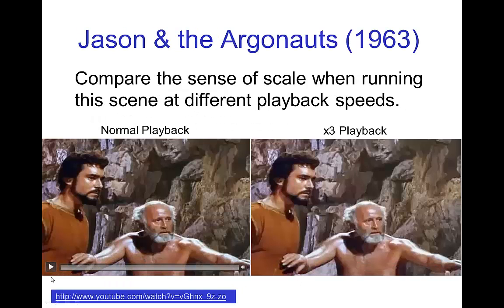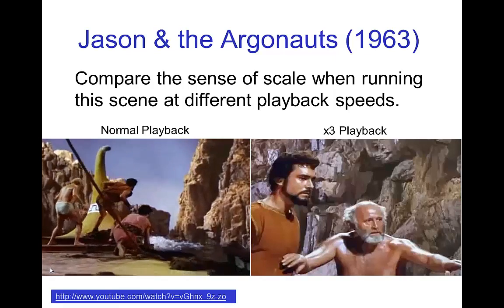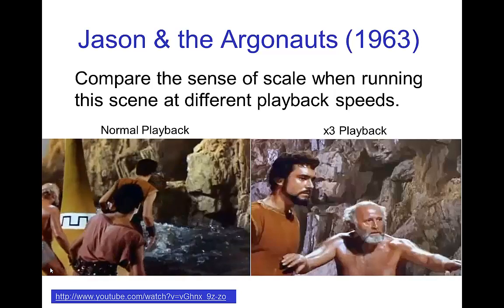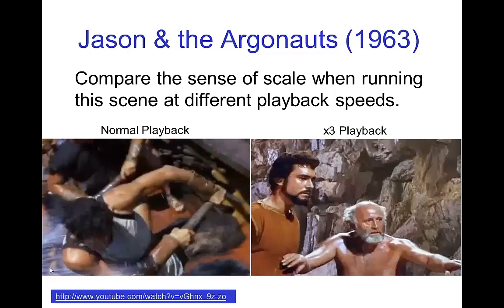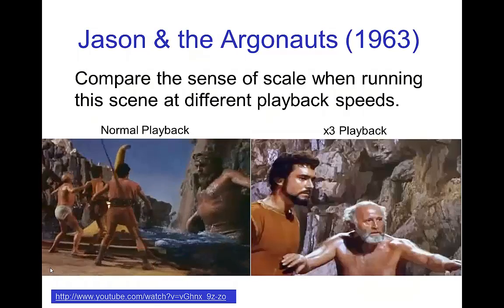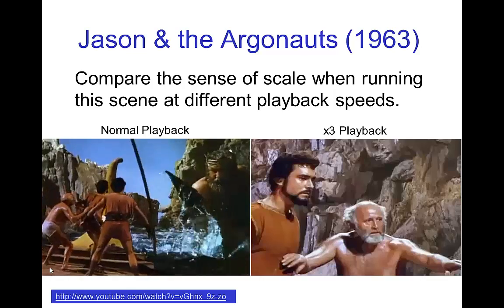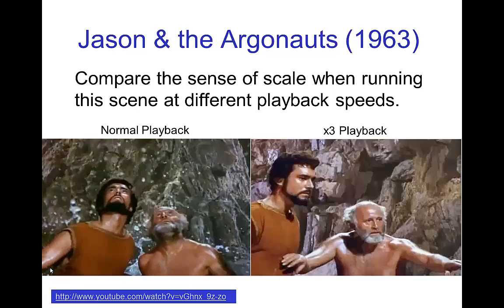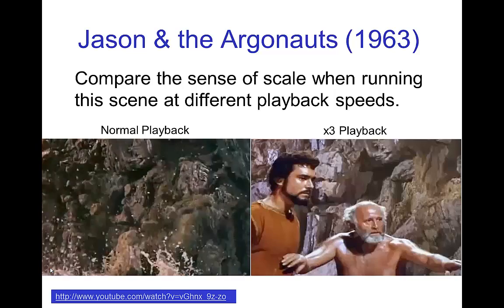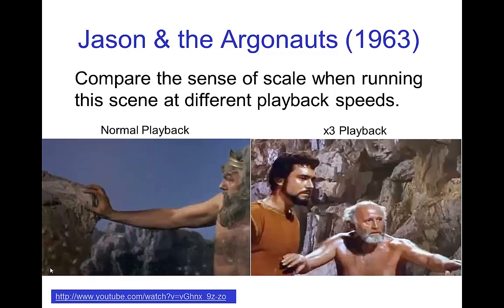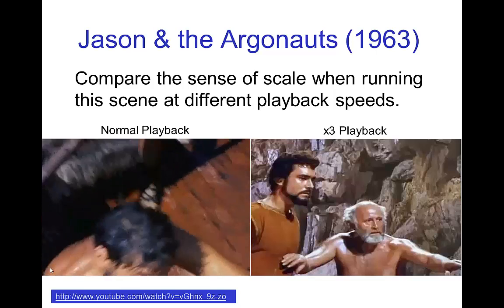Here's an example from Jason and the Argonauts. In this scene, a giant is appearing. This is composited — the people on the boat are filmed at normal speed, while the cliffs and the giant are filmed separately with a high speed camera and then composited together. As the rocks fall, they appear to be giant boulders. The giant moving slowly also gives a strong sense of huge scale.